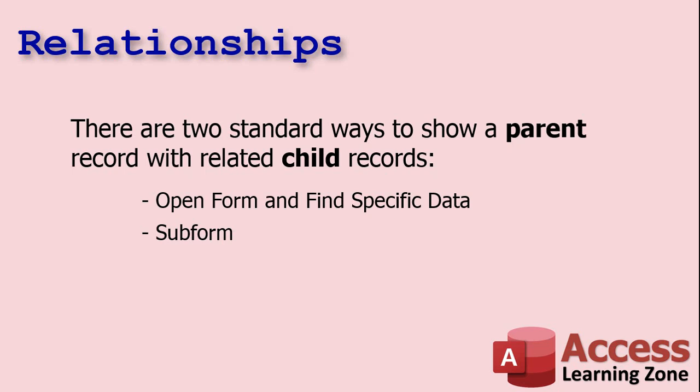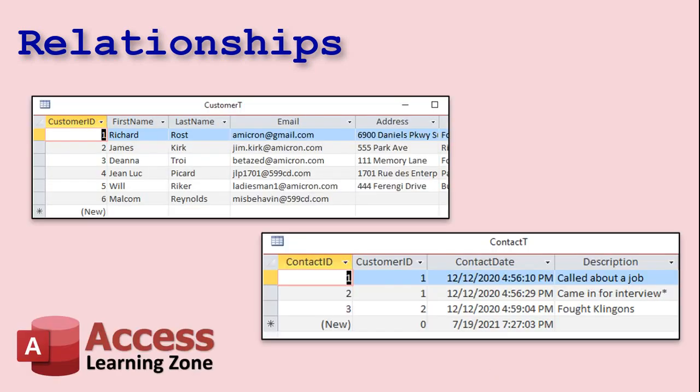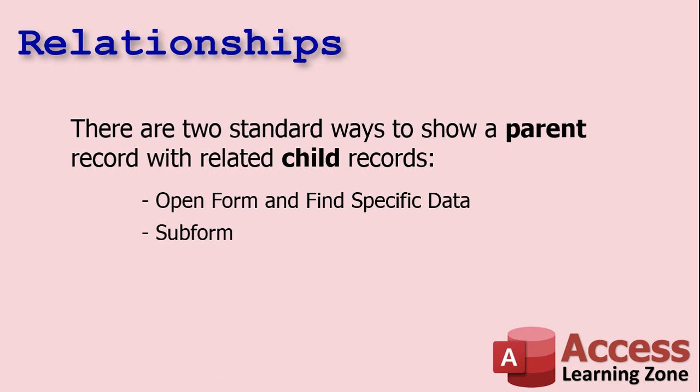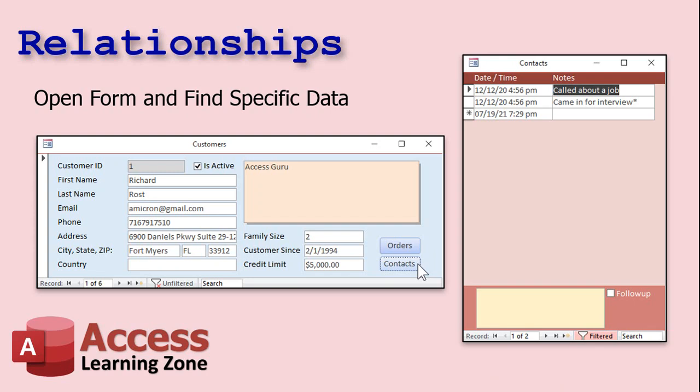There are generally two ways to show a parent record with related child records. The customer is the parent table, and contacts is the child table — the many side of the one-to-many relationship. You can either open a form and find specific data using the control wizard, or you can use a subform.